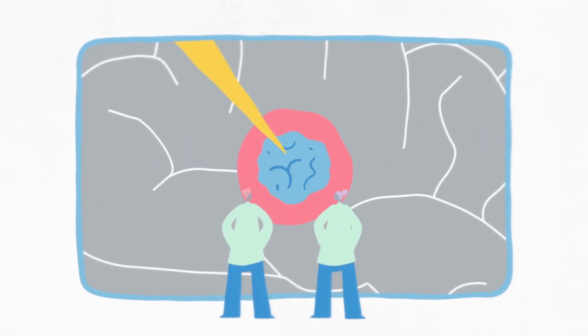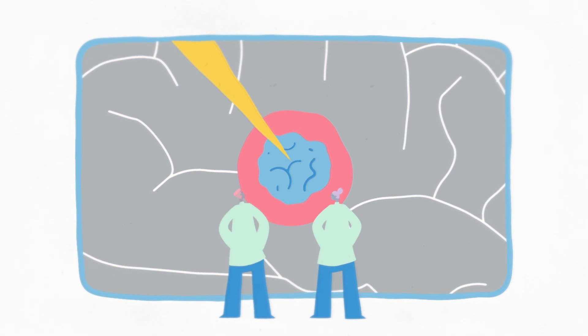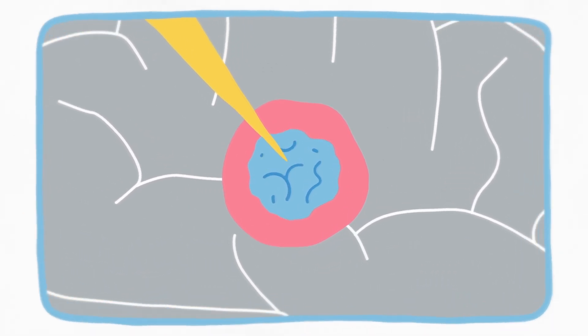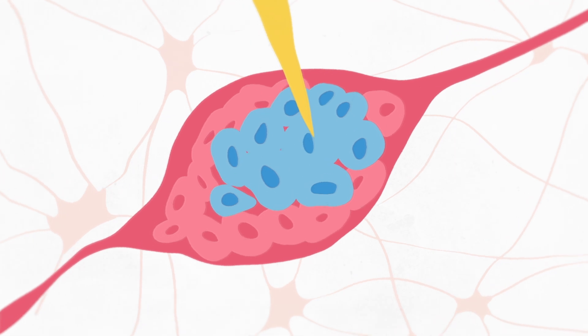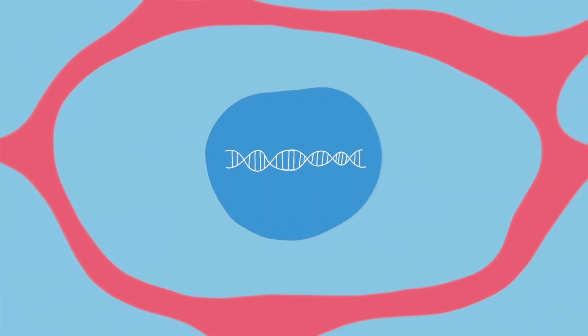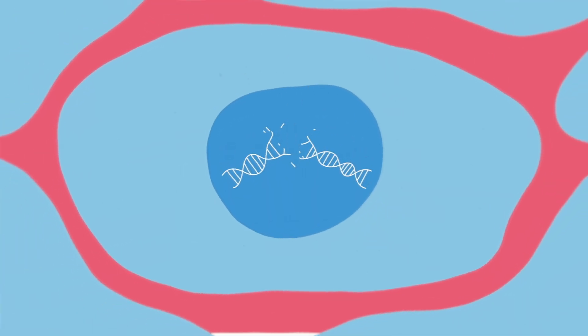But what exactly does this ingenious approach do to the tumors in question? When several beams of radiation intersect to strike a mass of cancerous cells, their combined force essentially shears the cell's DNA, causing a breakdown in the cell's structure.